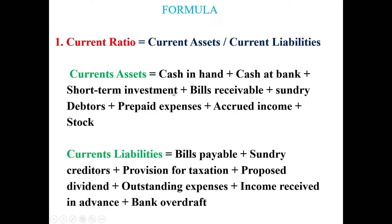Current assets include: cash in hand, cash at bank, short-term investment, bills receivable, sundry debtors, prepaid expenses, accrued income, and similar items. Current liabilities include: bills payable, sundry creditors, provision for tax, proposed dividend, outstanding expenses, income received in advance, and bank overdraft. This gives us the current ratio.